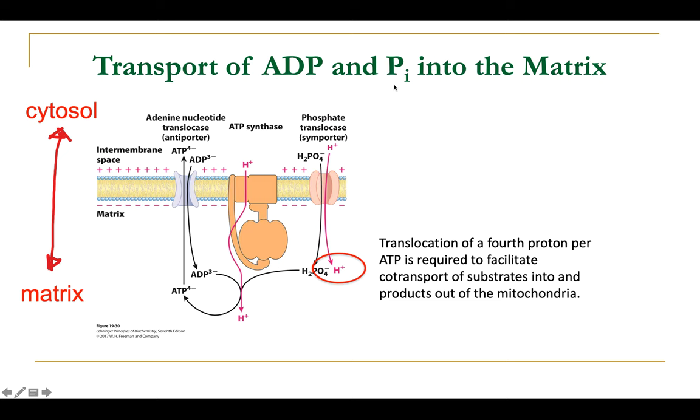The point where ATP is consumed and required is outside of the mitochondrial matrix — in the cell cytosol. The mitochondria are considered as power plants of the cell, producing bulk ATP.